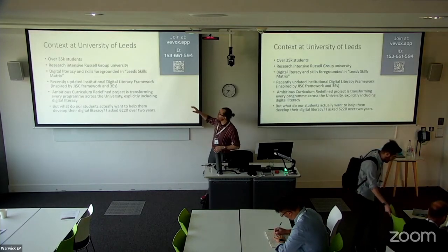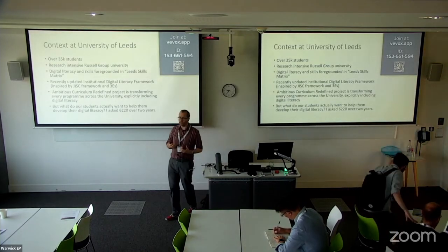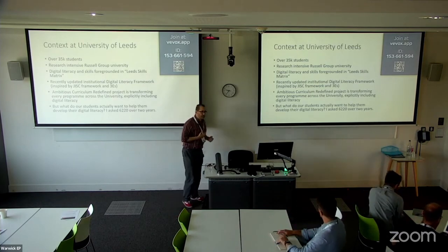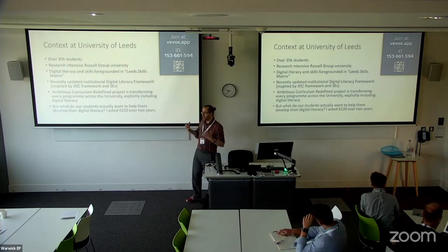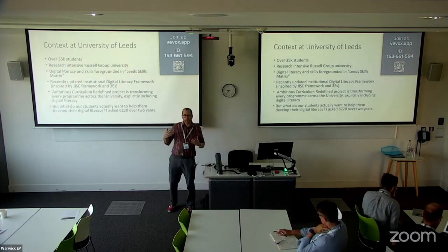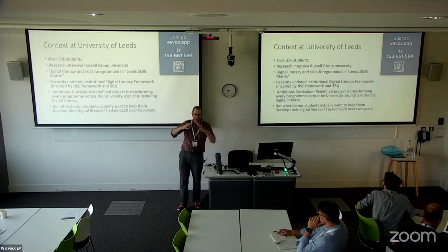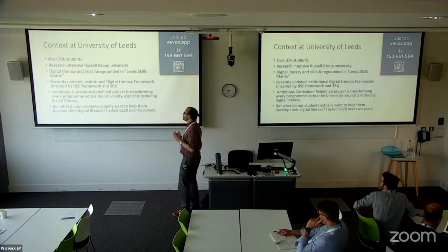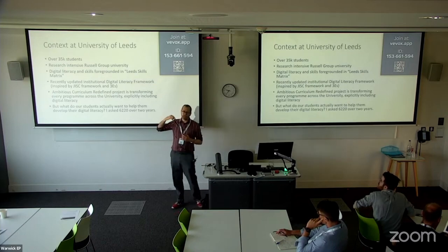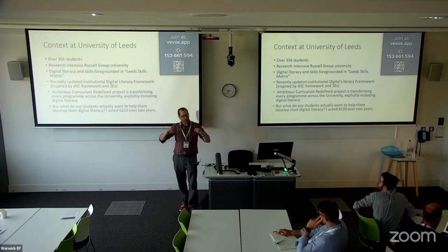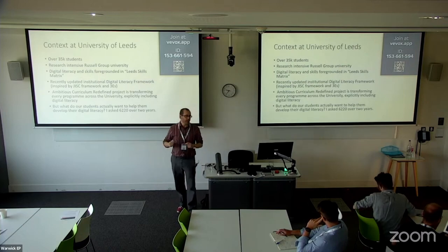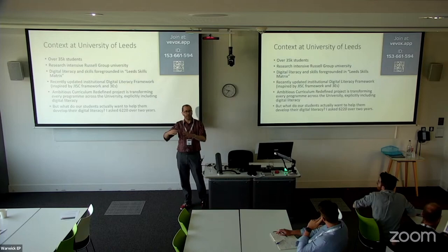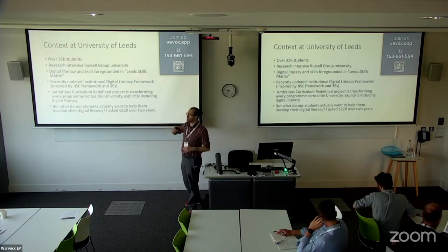A little bit of context: it's quite a large university, over 35,000 students. We're having a bit of a push on digital literacy at the moment. We've recently created what's called a Leeds Skills Matrix, which brings together a number of different skills and literacies. Digital literacy is one of the three key areas. We've also recently updated our institutional framework to bring it in line with the high-level categories from JISC's framework, using a three E's structure to make it progressive — so there's a sense of ongoing development across each category.